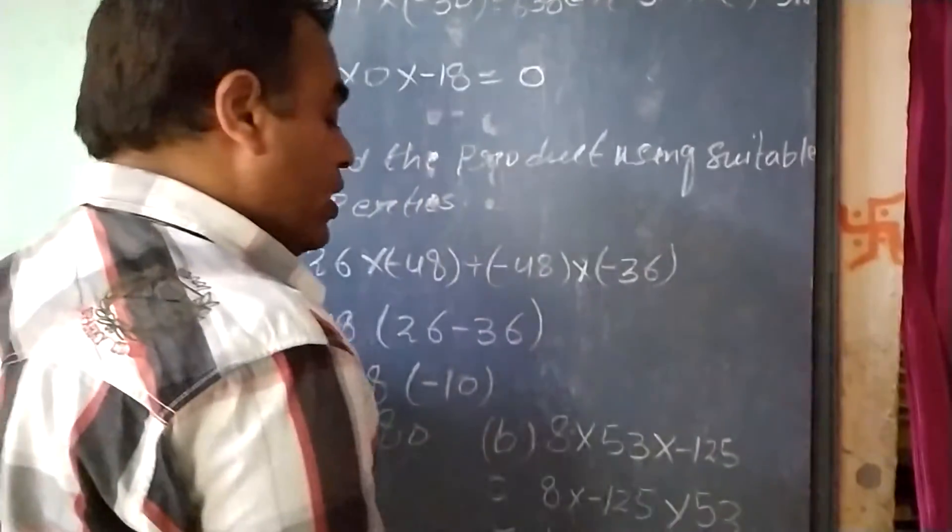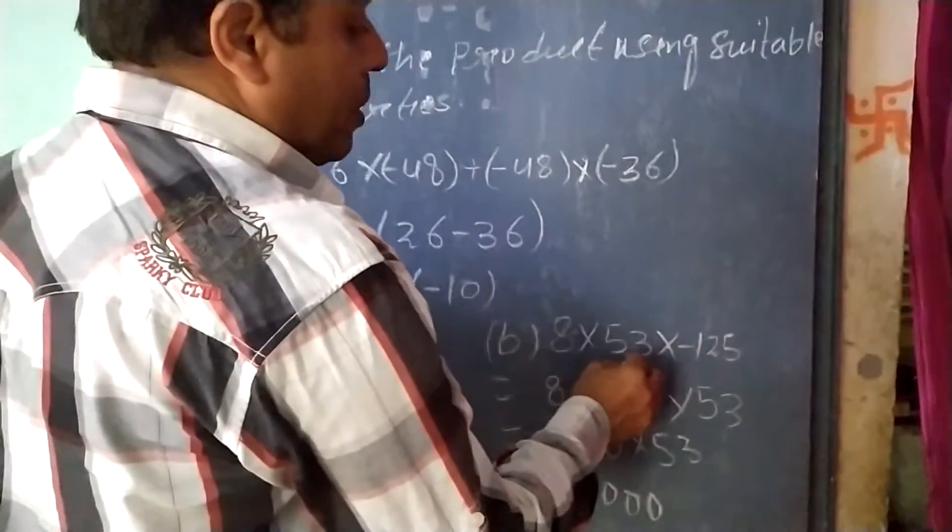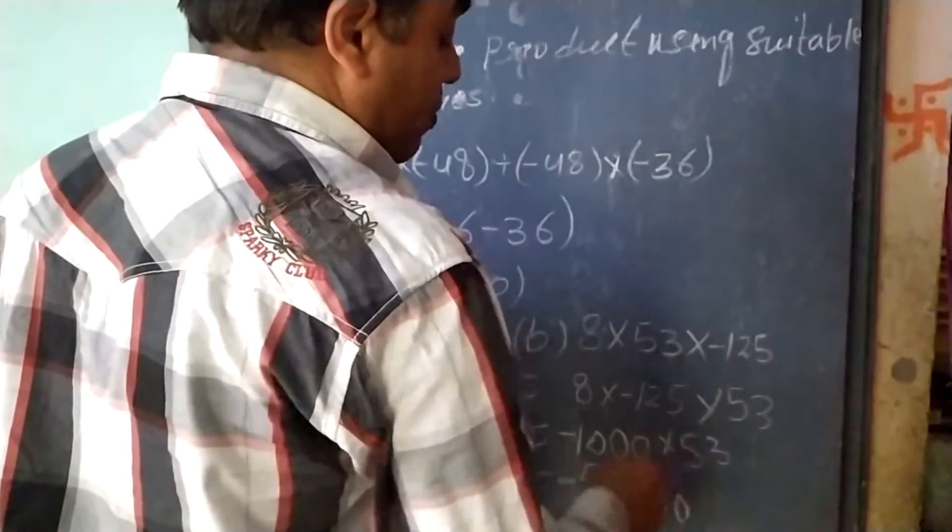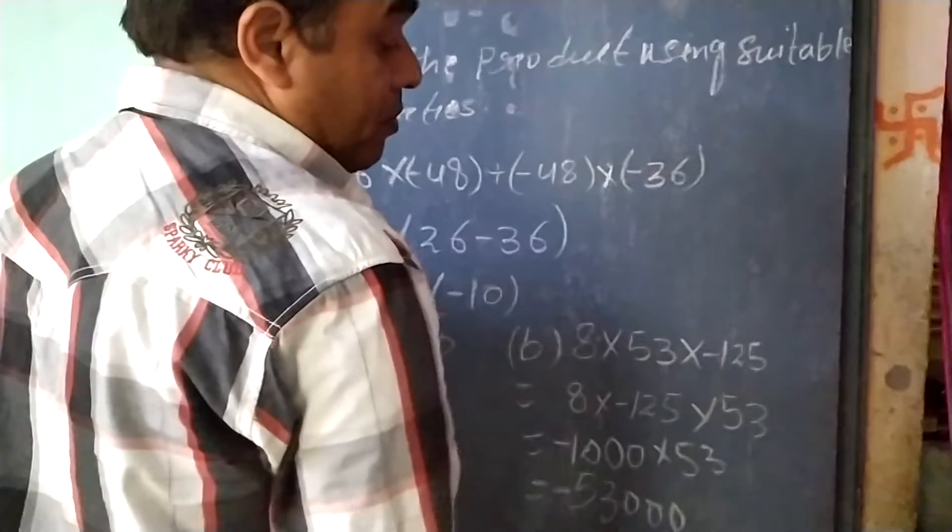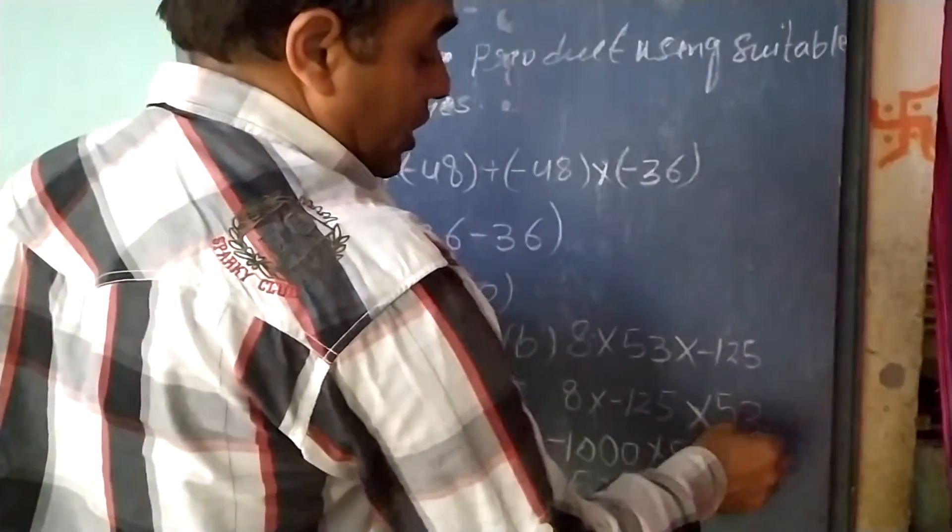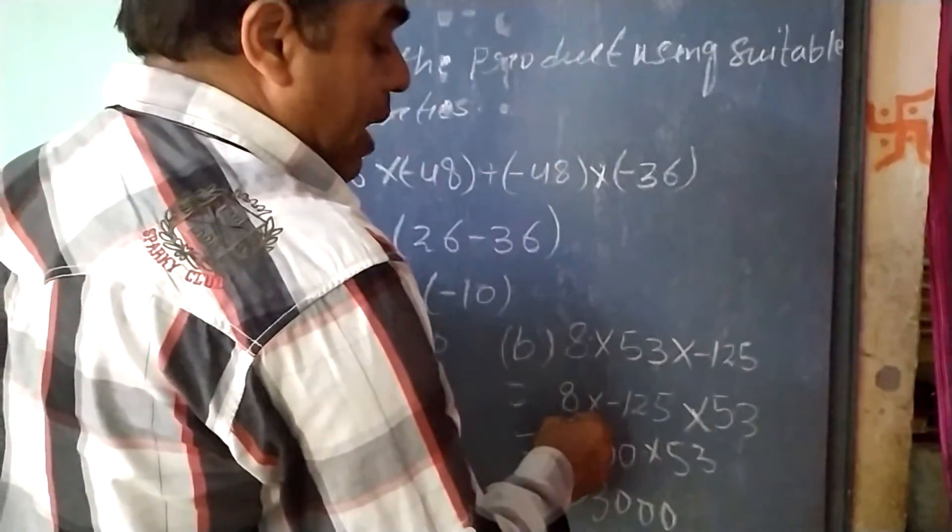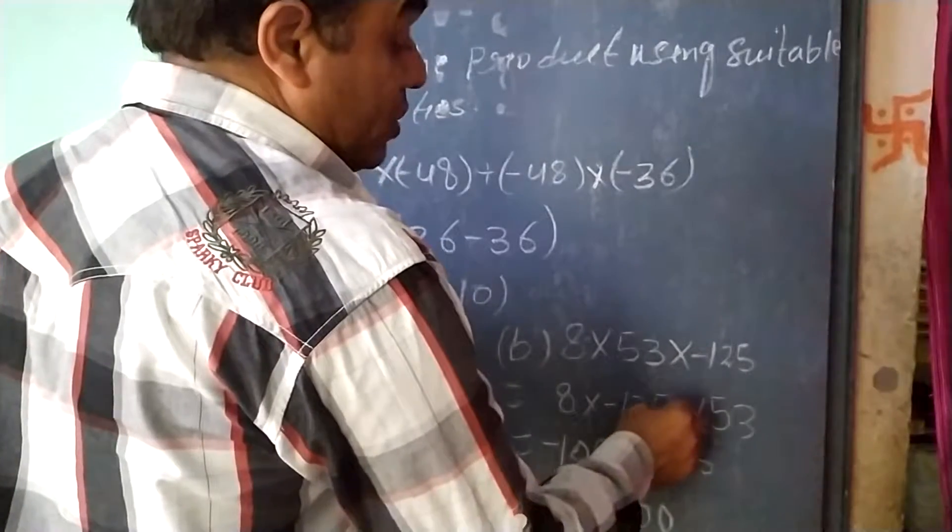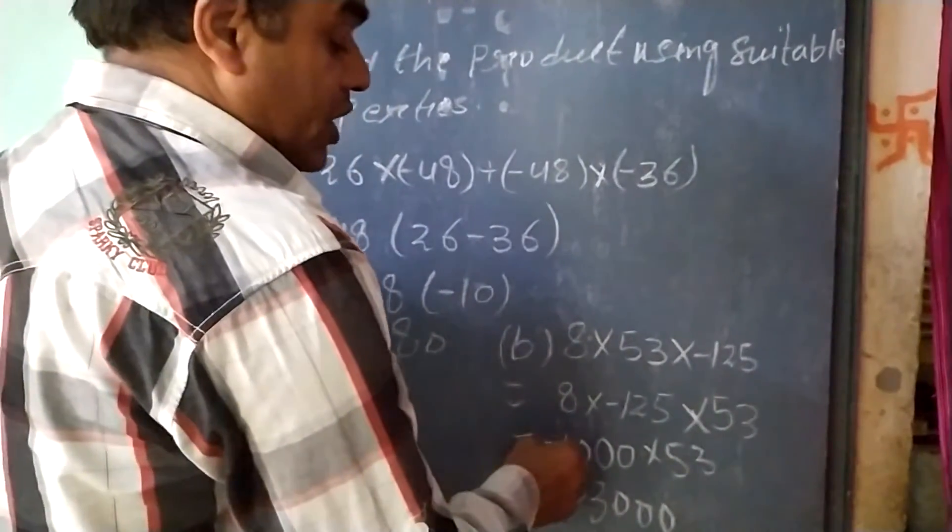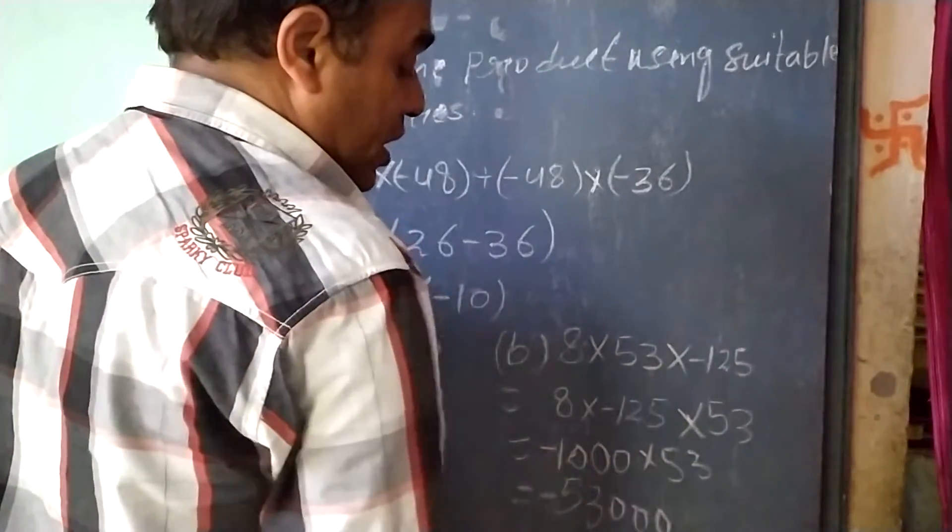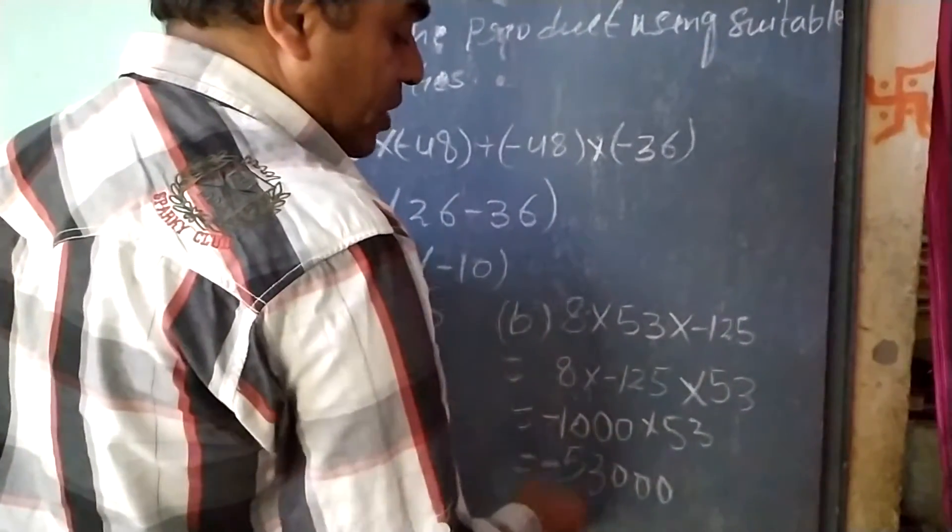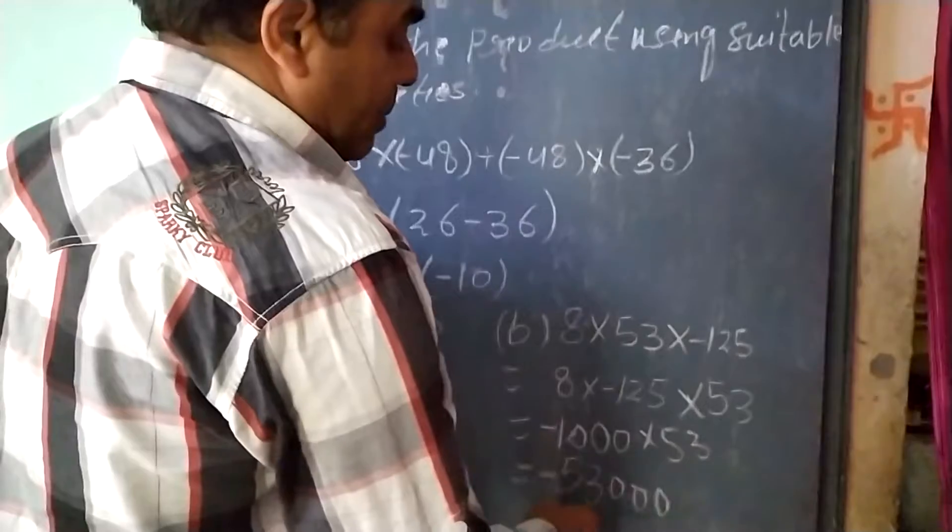Similarly here, 8 multiplied by 53 multiplied by minus 125. So, 8 multiplied by minus 125 into 53. When we multiply 8 by minus 125, we get minus 1000. Minus 1000 multiplied by 53, we put three zeros on the 53 and add the minus sign to get the answer.